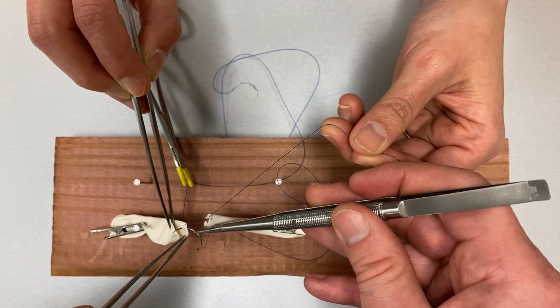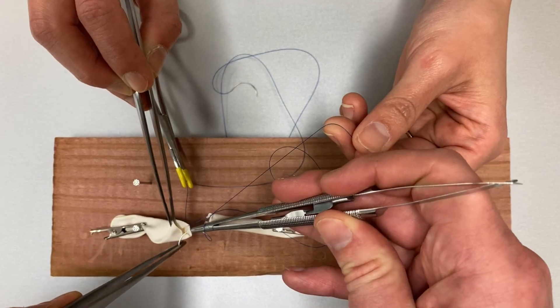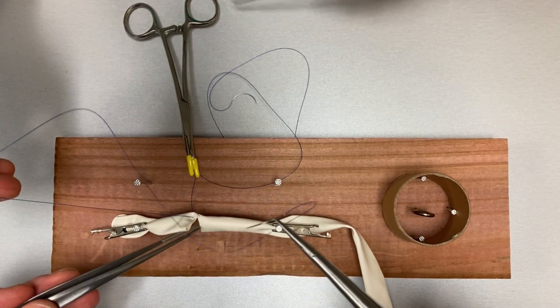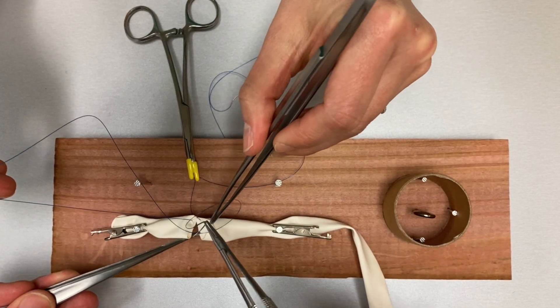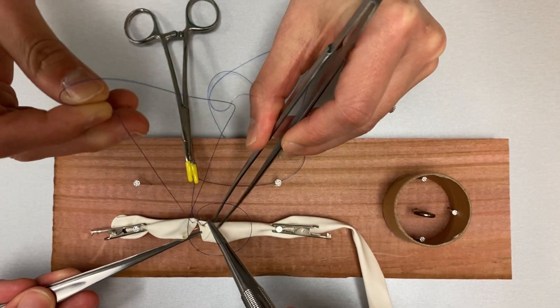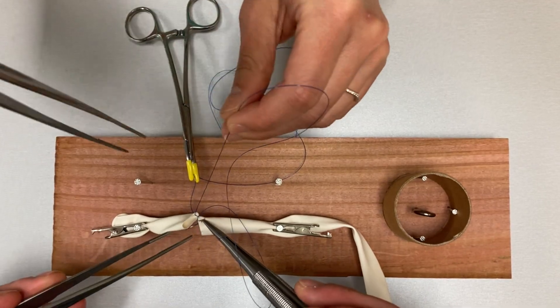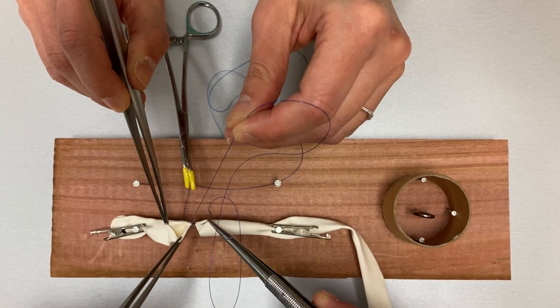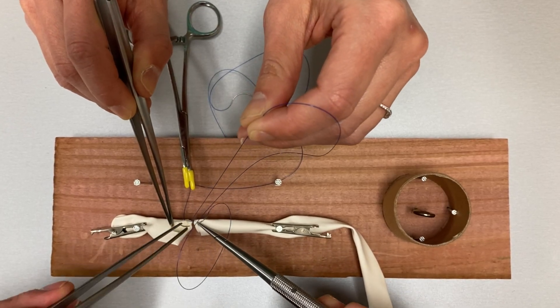Reload your suture backhand and take another outside-to-inside bite with your bite coming towards the operator. You will now begin to be able to load your needle forehand and take your bites in one. Continue running this stitch towards the 9 o'clock position of the left vessel end.